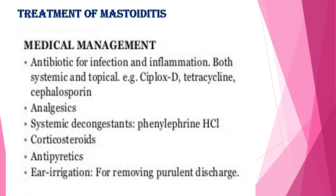There are two types of treatment for mastoiditis: medical and surgical treatment. Medical management includes antibiotics for infection and anti-inflammatory medications such as corticosteroids, analgesics, systemic decongestants, and irrigation for removing purulent discharge. The patient also needs antipyretics because mastoiditis is associated with significant increase in body temperature.